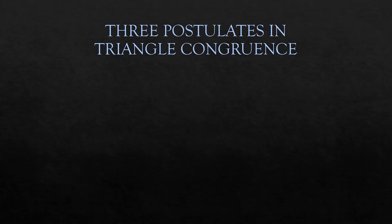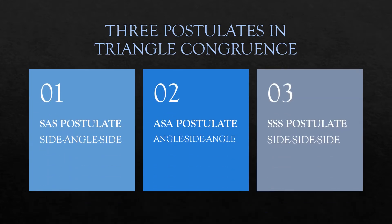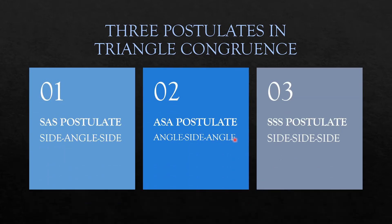We shall also be using the two-column proof in our discussions. Please also recall the three postulates on triangle congruence: SAS, or side-angle-side postulate; ASA, or angle-side-angle postulate; and SSS, or side-side-side postulate.